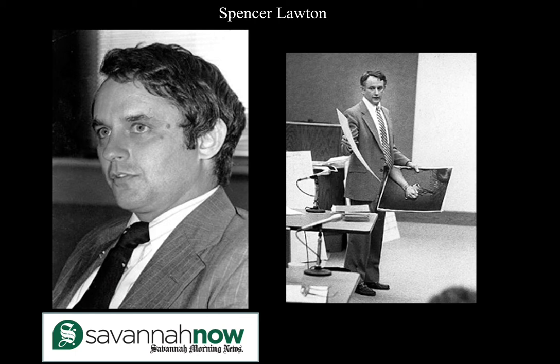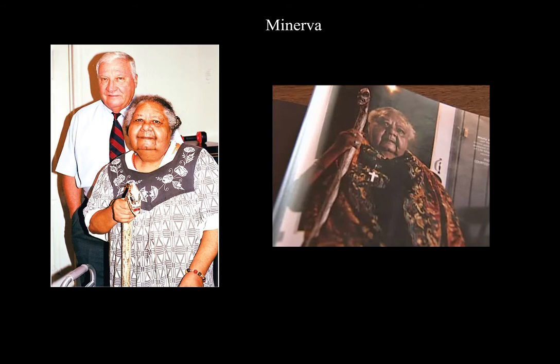Spencer Lawton is the prosecuting attorney that you will see in the story. He's kind of new on his job and trying to prove himself — it is a fascinating turn of events. Something to think about with him is how far will he go to be successful. Minerva is a voodoo priestess, and these were very difficult pictures to get because she believed that if someone had her picture, they could put a hex or a curse on her. So she really worked hard not to let her picture be taken. This picture of her is with Sonny Seiler, the attorney who worked for Jim Williams.